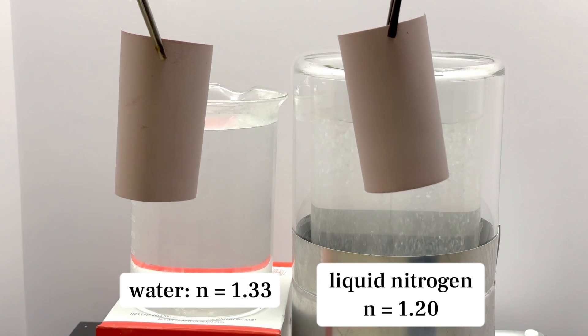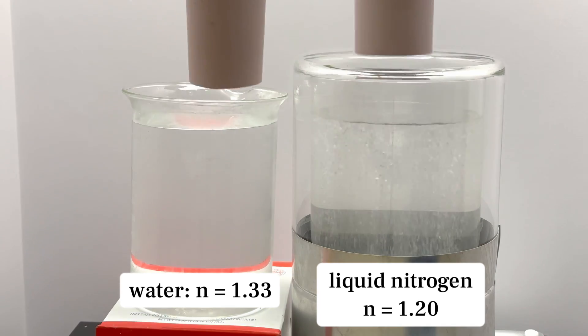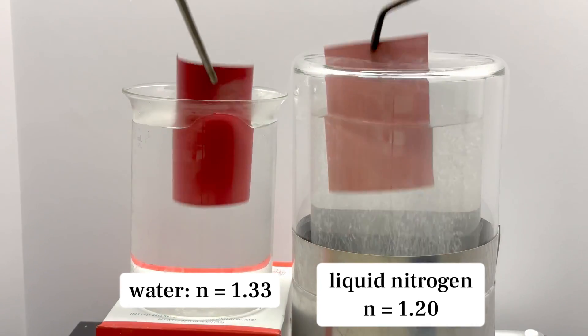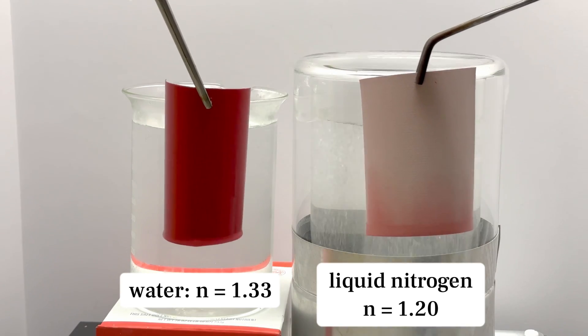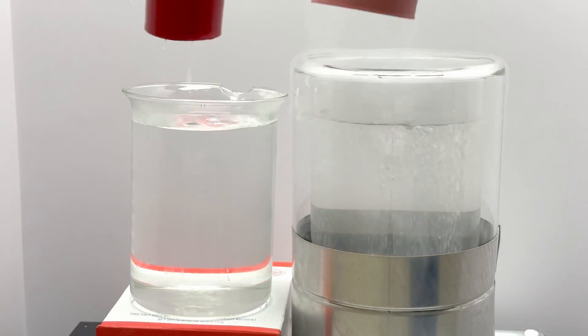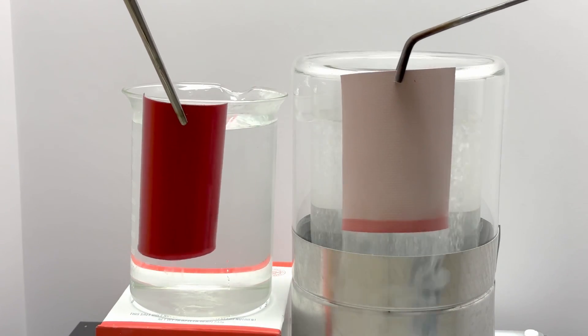But there was one liquid I tested that didn't work very well, and that's liquid nitrogen. But this makes sense to me because it has an index of refraction of only 1.2, and that's pretty far from 1.4. I did notice the color of the bath mat to change in the liquid nitrogen, but the effect was really subdued. Only a slight pink color was observed.